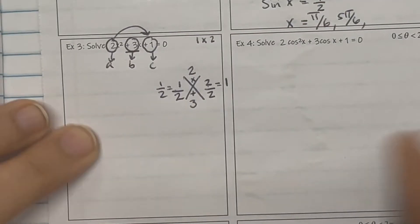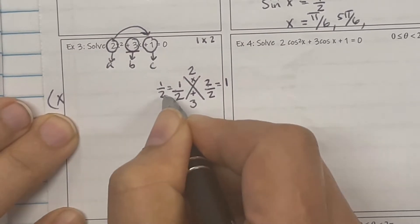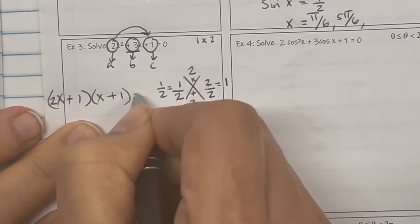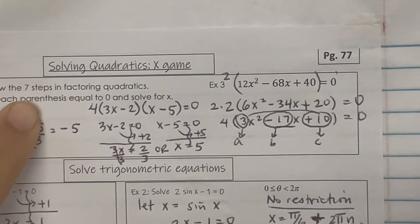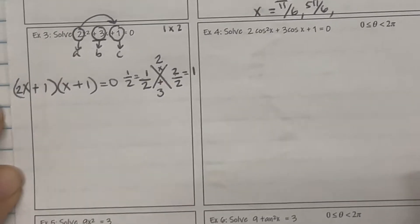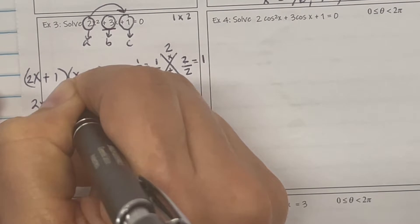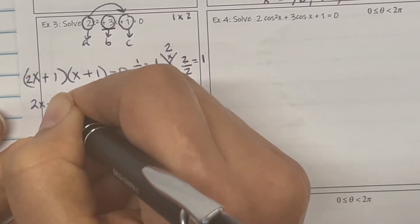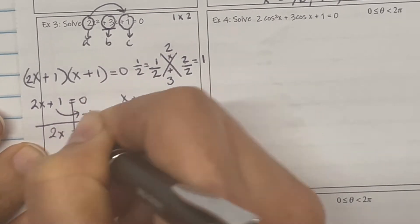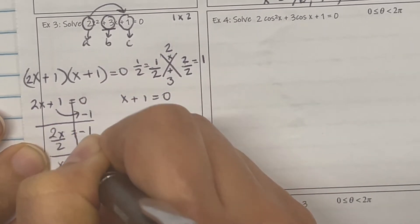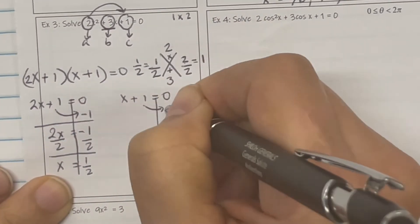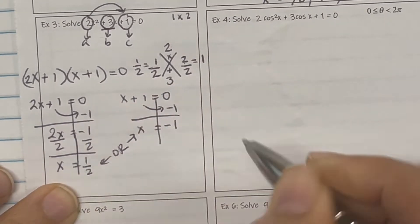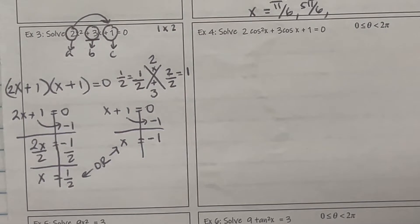If it's a fraction, you put the denominator with one of the x's, and the numerator by itself. If it's a whole number, it's just x plus 1. Then solve for each parenthesis: 2x plus 1 equals 0, and x plus 1 equals 0. Move the positive 1 to the other side — that's 2x equals negative 1. Divide by 2, x equals negative 1 half. For the other, take the 1 to the other side, so x equals negative 1.